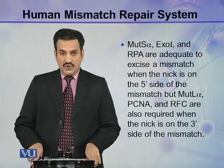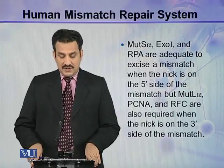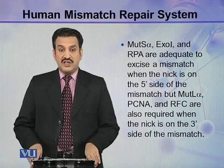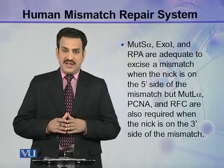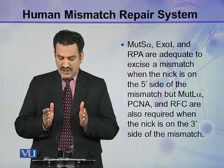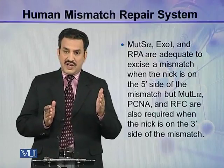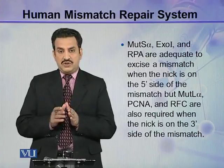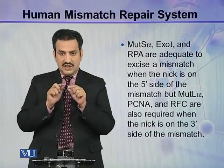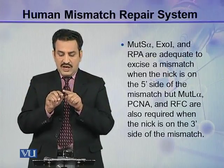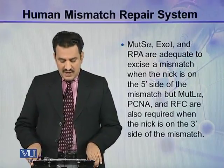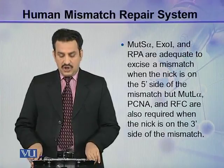MutS-alpha, Exo-1, and RPA are adequate to excise a mismatch when the NIC is on the 5' side of the mismatch. So these three are required when the NIC is on the 5' side. You can see this is a strand, and if the mismatch is in the center and the NIC is on the 5' side, then MutS-alpha, Exo-1, and RPA are required.